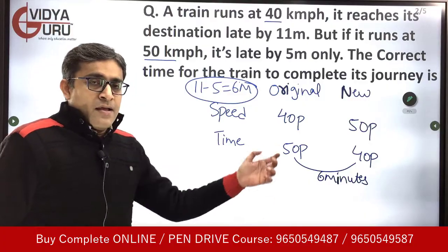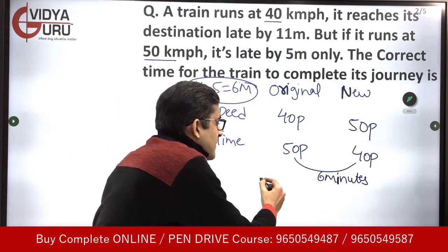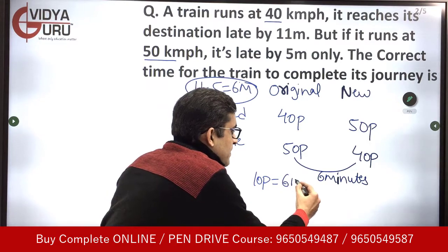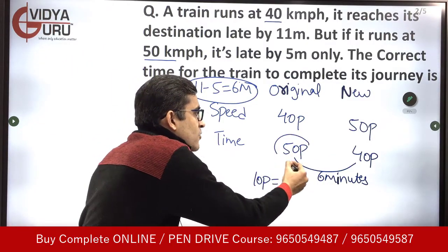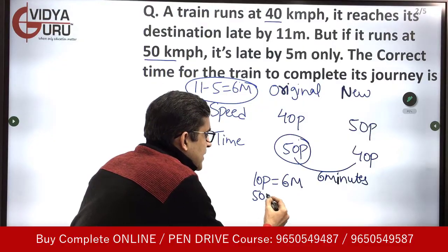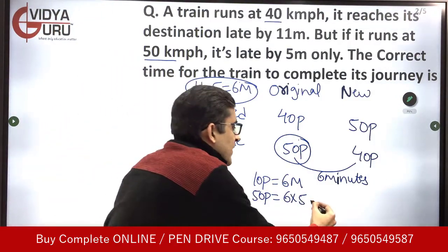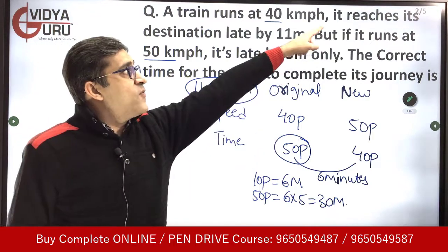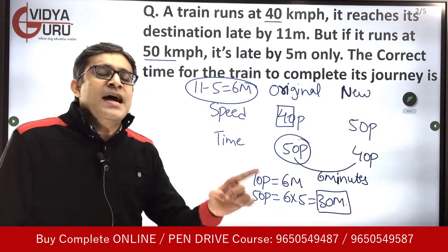Now here's the interesting part. The time taken was earlier 50 parts, now it is 40 parts — a change of 10 parts. So a change of 10 parts is equal to a change of 6 minutes. The time taken originally was 50 parts. Since 10 parts equals 6 minutes, 50 parts will be equal to 6 times 5, that means 30 minutes. Originally when the speed was 40 kilometers per hour, the time taken was 30 minutes — that means half an hour.